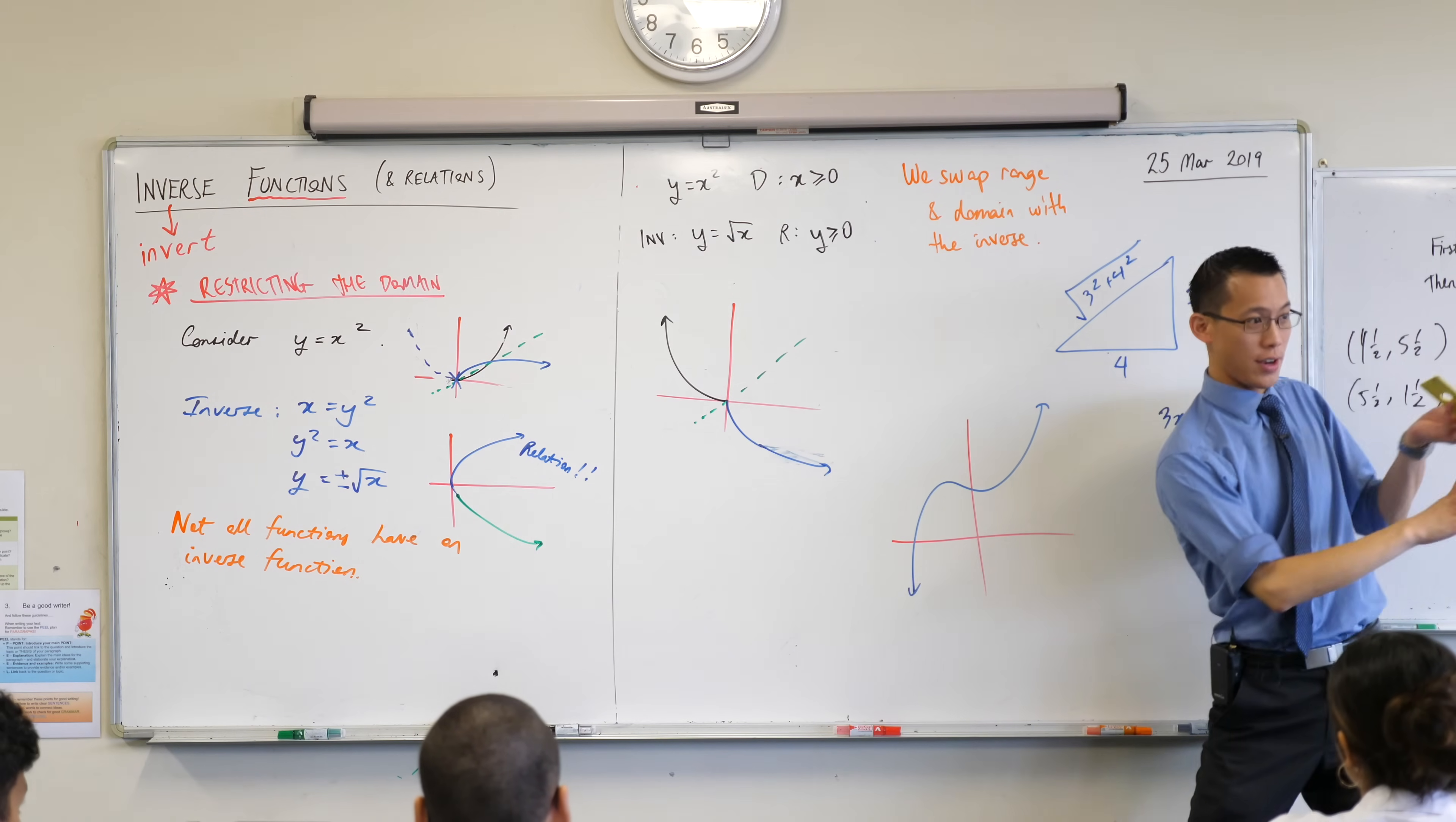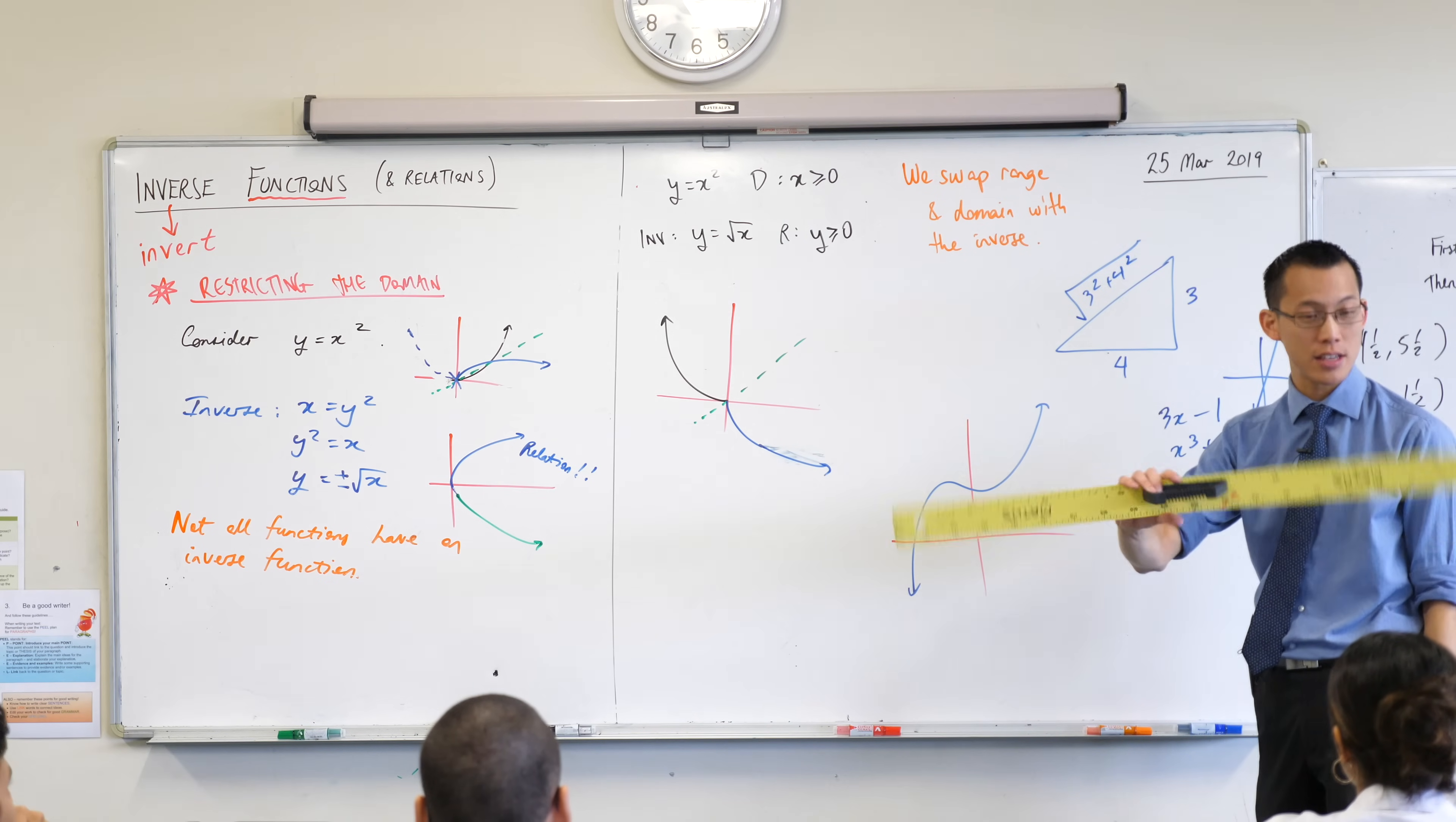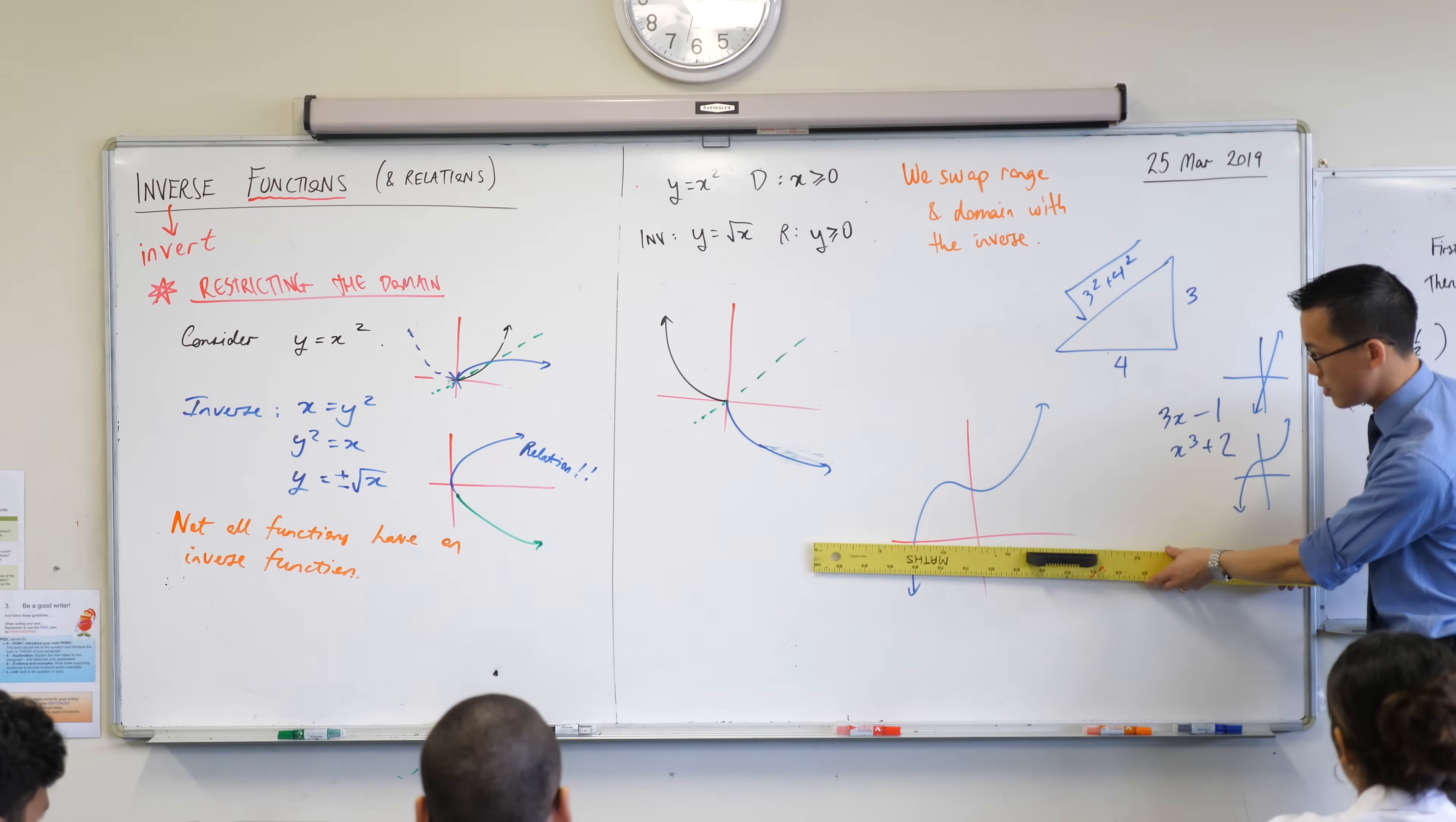When you're thinking about inverses, everything swaps. Vertical isn't vertical anymore. It's now going to be horizontal. If you swap x and y, this vertical line becomes horizontal. So if I put a horizontal line against this, have a look, is there a place where it fails? And the answer is yes.